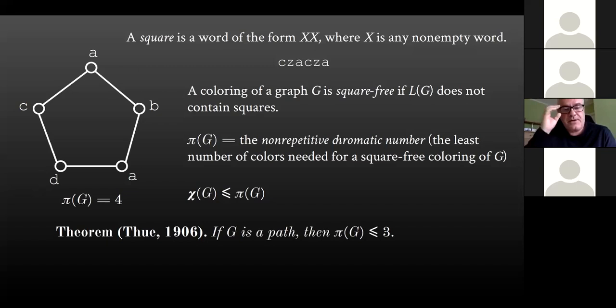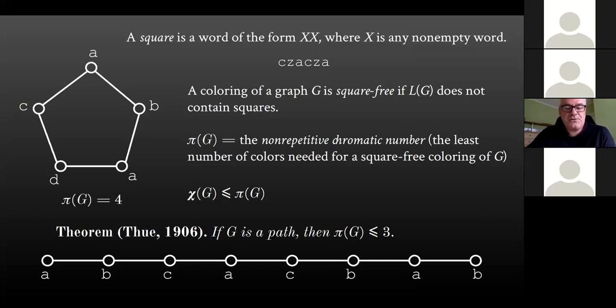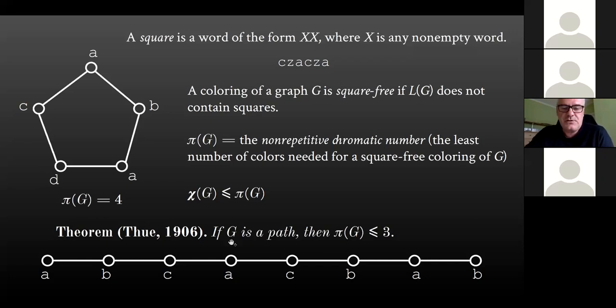The famous theorem of Thue can be expressed in these terms as a statement of graph coloring: if G is a simple path, then the non-repetitive chromatic number is at most three. Of course, coloring a path is the same as building a square-free word, and we know that we can do it over an alphabet with three letters. Perhaps Thue would be very surprised to see his theorem stated in such mysterious terms.